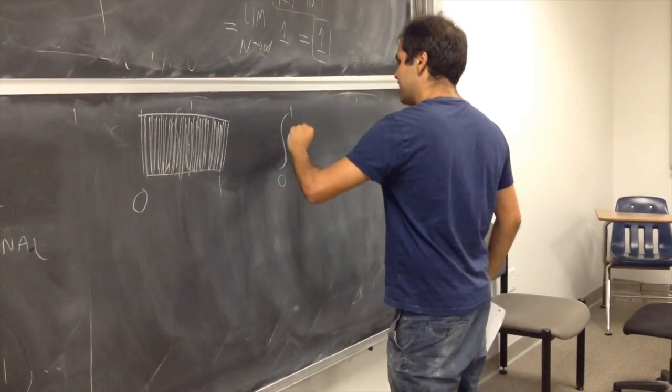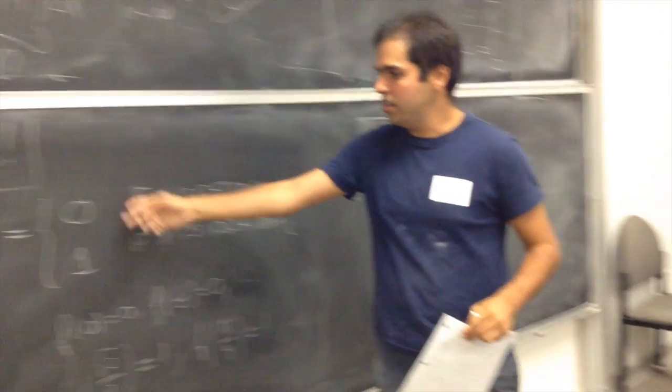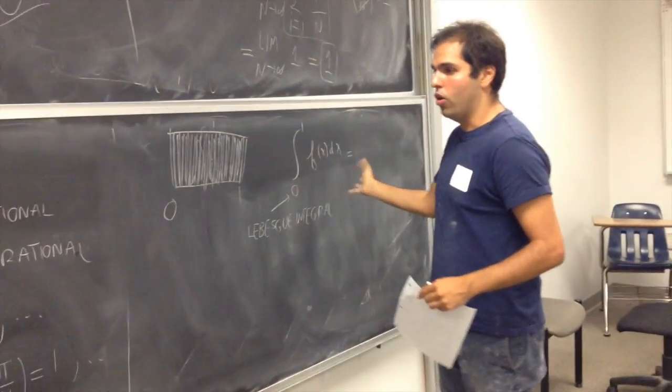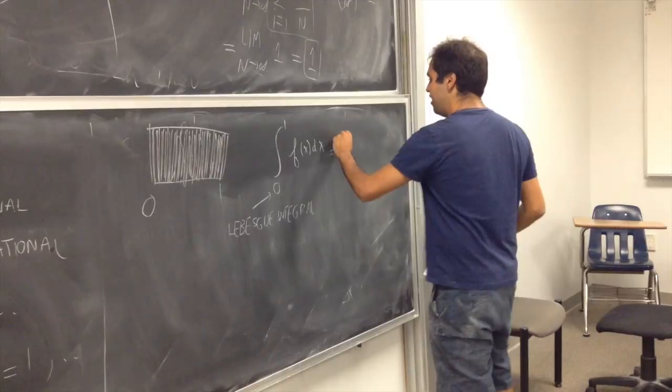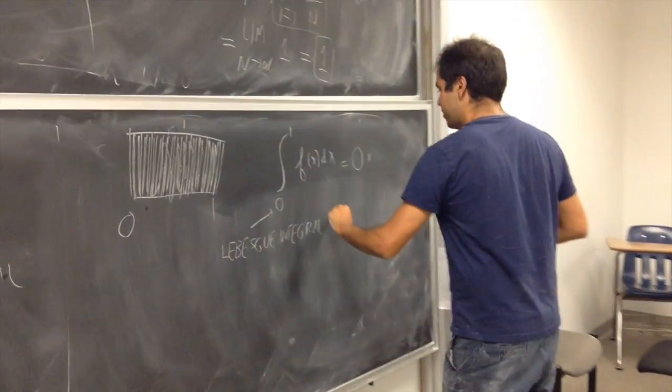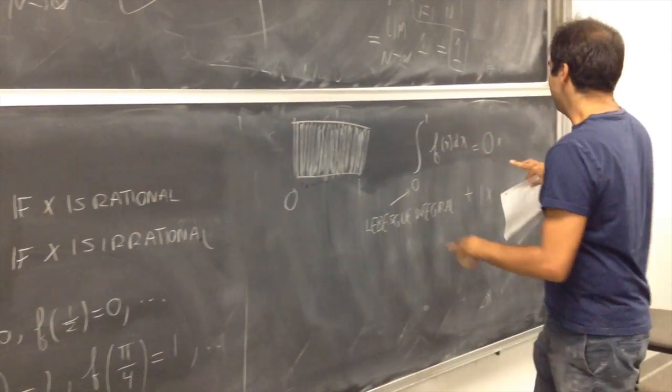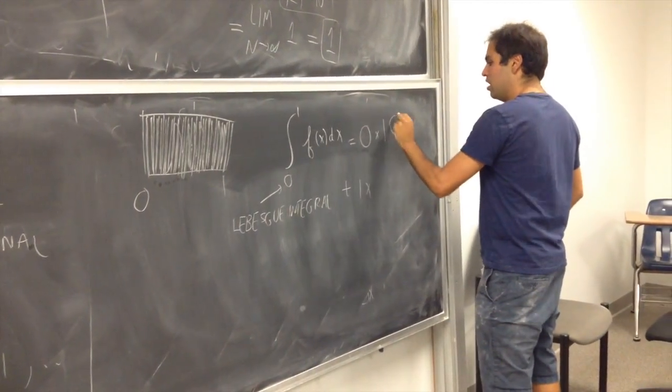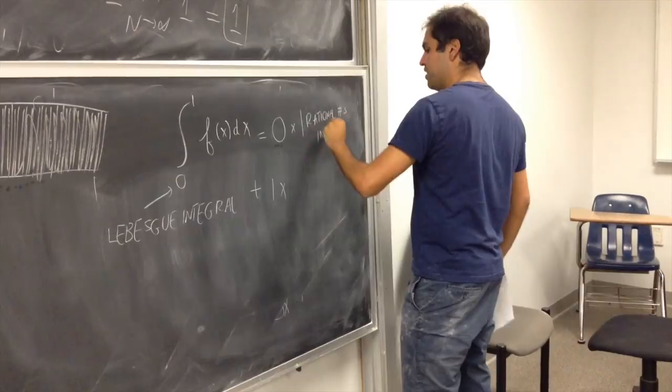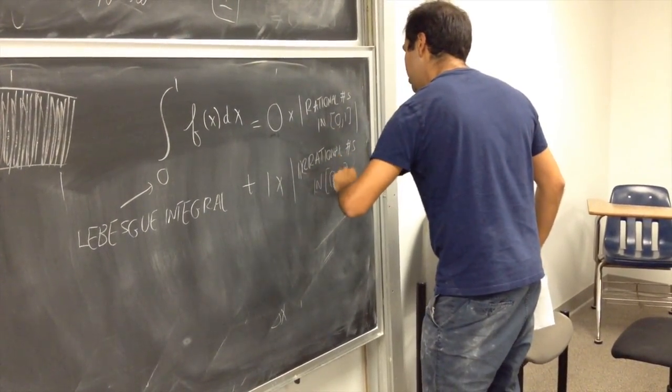And the reason is, with this Lebesgue integral, now it's a super integral, all it says is, well, look at the values of the function. So, here we have 0 and 1. So, it's just two values. Therefore, it's called a simple function. And to calculate the new integral of this function, it's just the value times, sort of, how many times this value is attained. So, because the values are 0 and 1, you just need to see how many times a function is 0. Well, it's just 0 on the rational numbers. So, the integral is 0 times what's called the measure of the rational numbers in the interval 0, 1, plus 1 times the measure in the interval 0, 1.